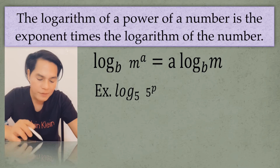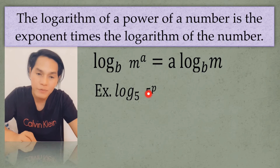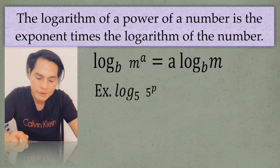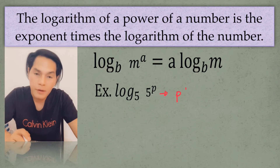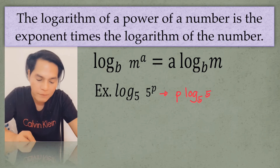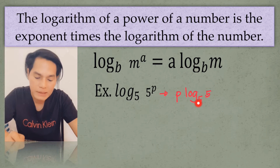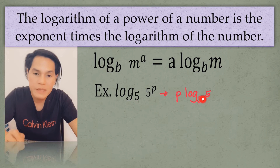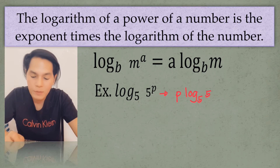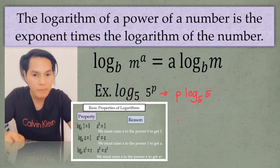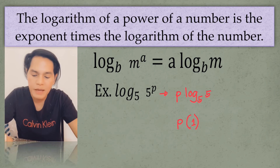For an example, I have the log of 5 to the power of p to the base 5. That is equal to p first as the coefficient, multiplied by the log of 5 to the base 5. Remember, the log of 5 to the base 5 can be simplified to 1 using the basic properties of logarithm. So p times 1 equals p as our final answer.